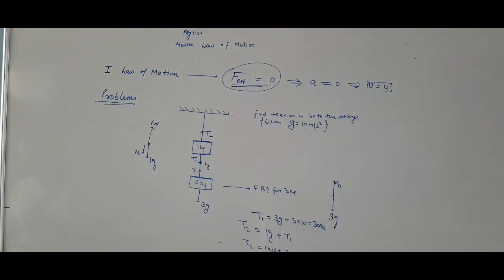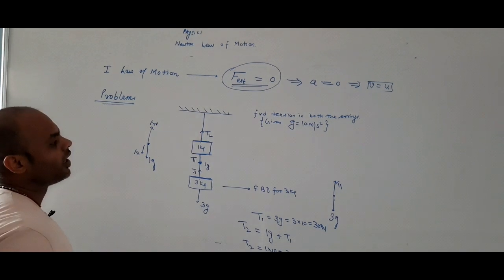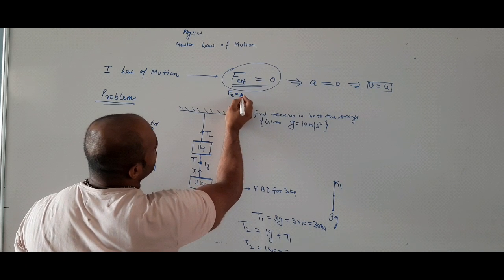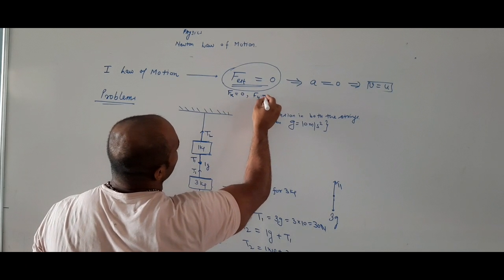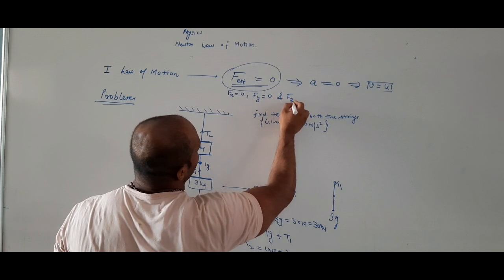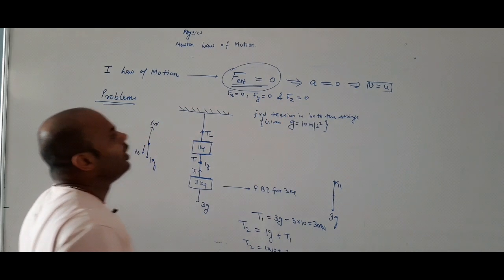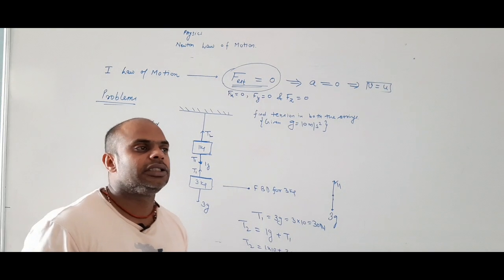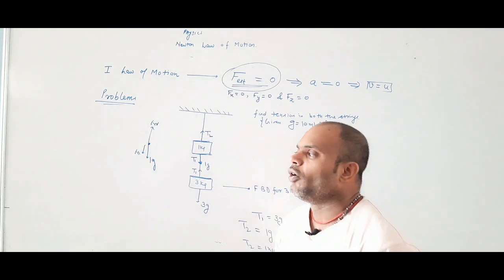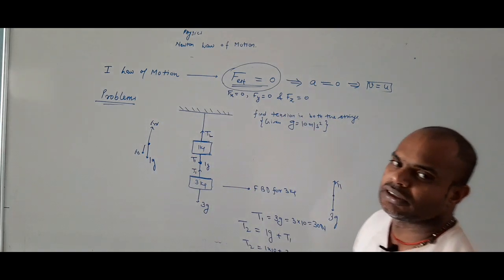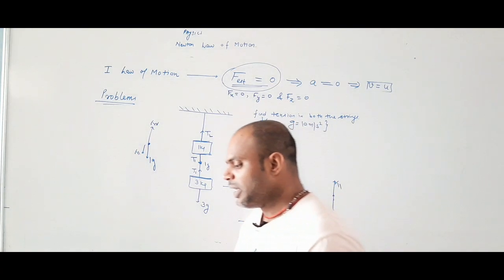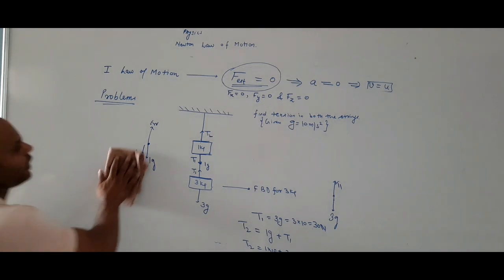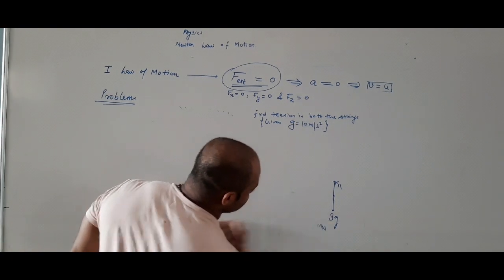The next type of problem involves two axes. If there are two axes, then we resolve the force: Fx equals zero along the x-axis, Fy equals zero along the y-axis, and if there is a z-axis, then Fz equals zero as well.